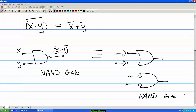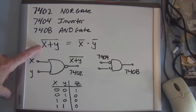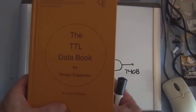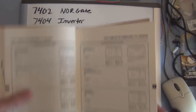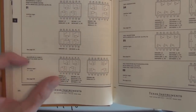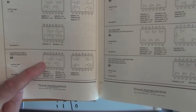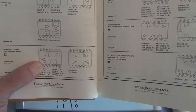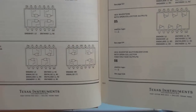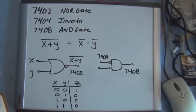Now I'll use the Heathkit digital trainer to verify these two theorems by wiring up some logic gates. For the first theorem, we're verifying that a NOR gate is equivalent to an AND gate with inverters on the input. Looking in my vintage TTL data book, I found that a 7402 is a quadruple two-input positive NOR gate. We only need one gate — inputs are pins 2 and 3, output is pin 1, power is pin 14, and ground is pin 7.